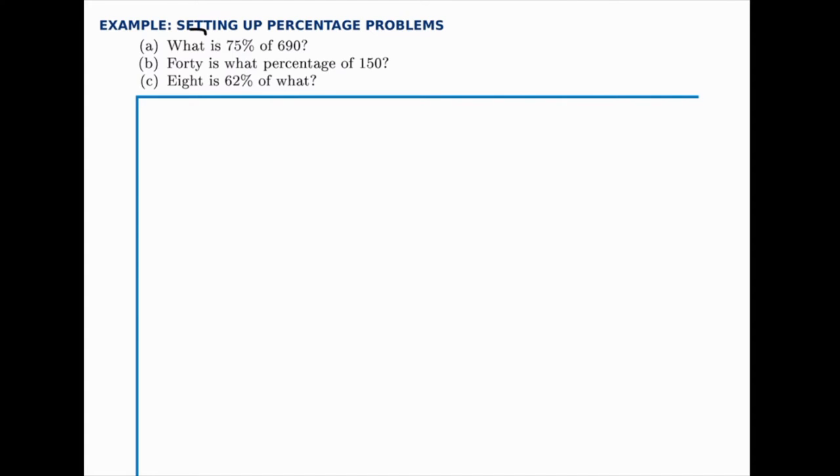So, in Part A, the first number is unknown. In Part B, the percentage is unknown. And in Part C, the second number is unknown.